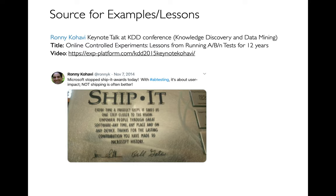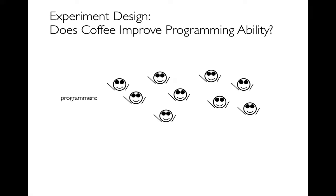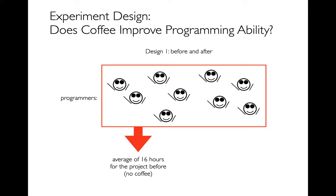I want to think a little bit about experimental design in general before we talk about how to optimize something like Bing. A lot of the examples here are drawn from that talk. As background on experimental design, let's say you have a bunch of programmers and you're trying to figure out whether Copilot improves their programming ability. Experimental design describes what process we'll use to try to answer this question. One design — not necessarily a good one — is a before-and-after approach.